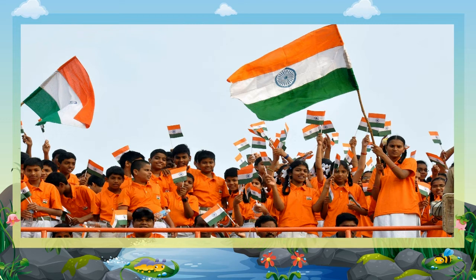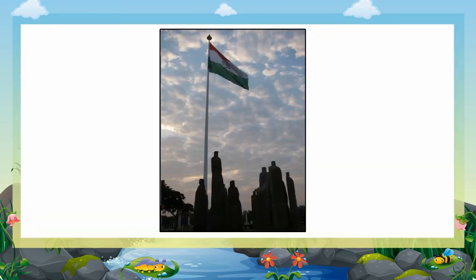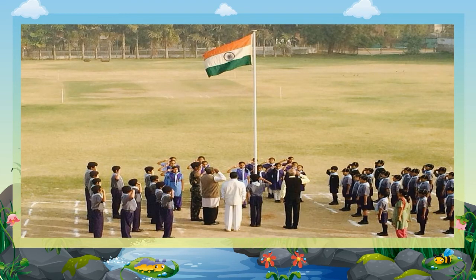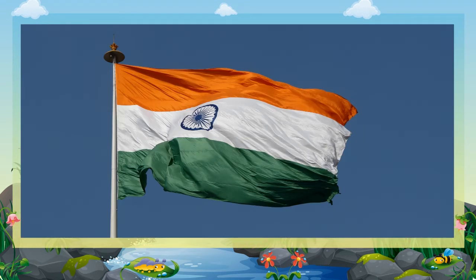There are certain rules which we have to follow while hoisting our national flag. The saffron band should be at the top when the flag is raised. The national flag should always be taken down at sunset. Whenever the national flag is hoisted or lowered, we must stand at attention and salute it. While other flags are being hoisted in a row, they should be to the left of the national flag. The flag should not be dirty or torn when it is hoisted.